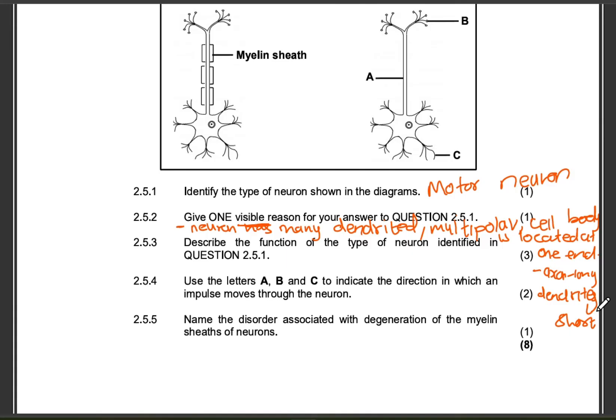In my videos, I always talk about the mark allocation for questions worth three to six or seven marks — we're not skipping those questions. Do not leave empty spaces in the exam at all. Question 2.5.3: describe the function of the type of neuron identified in 2.5.1. You are being asked to describe — not just name — the function. Make sure your answer earns all three marks.